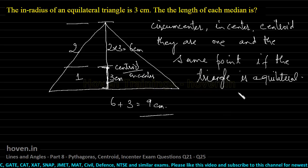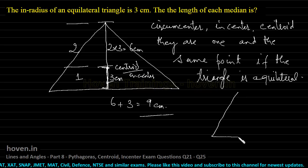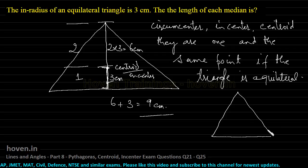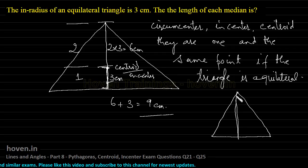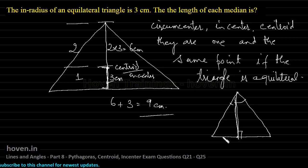So you should remember one property of the equilateral triangle. That this same line is the median. This same line is the angle bisector of this one. And this same line is the perpendicular bisector of the opposite side.